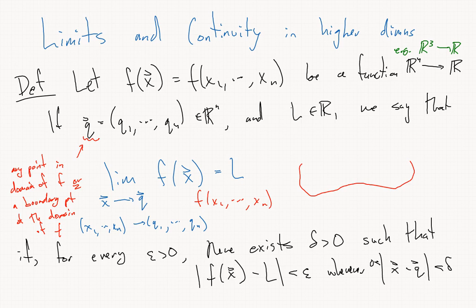If this is the domain of f, and q is on the boundary here, we could look at a sequence inside the domain of f which converges to q and evaluate f on those things. So we can talk about the limit of f going towards q even if f is not defined at q.